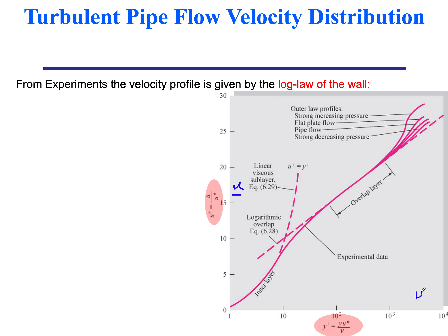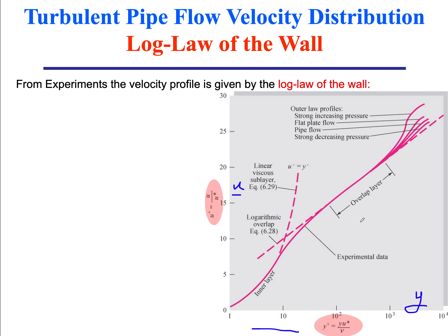Here we plot the velocity of the flow as a function of distance above the wall of the pipe. We're using a slightly modified coordinate system. When we plot velocity as a function of distance from the wall, we get a straight line, but we have a log-linear scale — so this is a logarithmic profile, called the log law of the wall. It's probably one of the most famous plots in fluid mechanics.